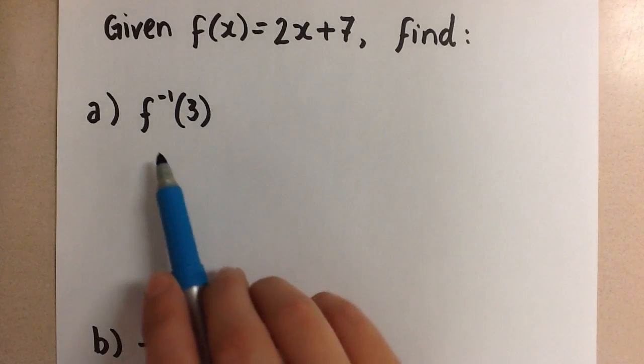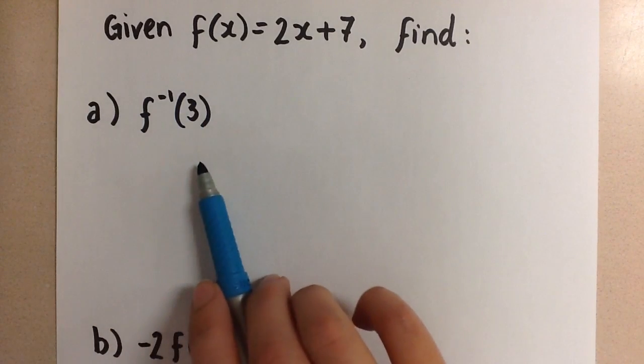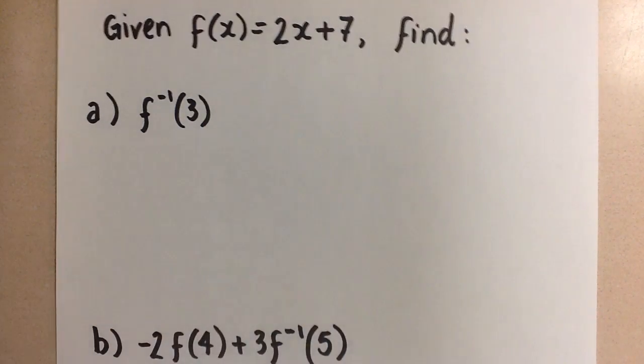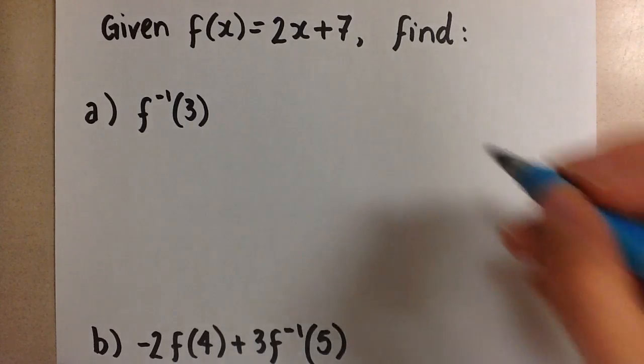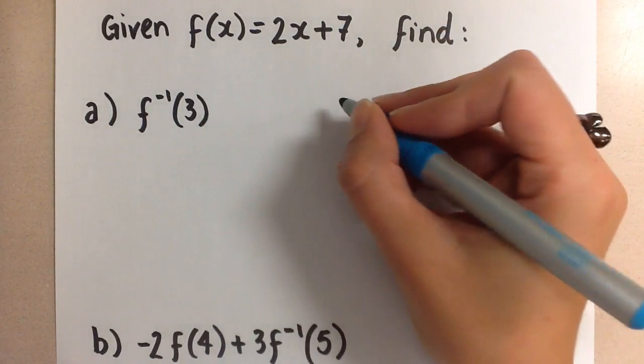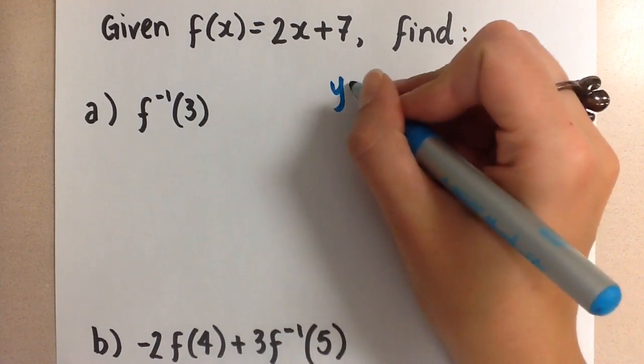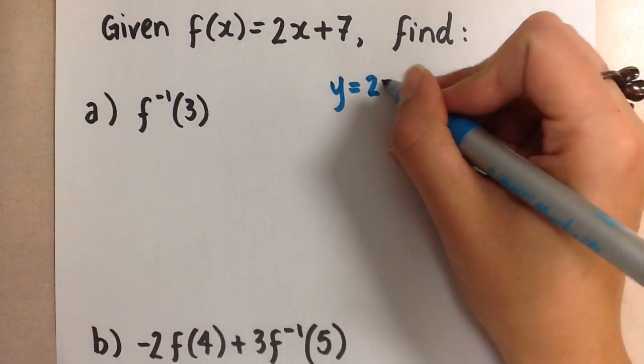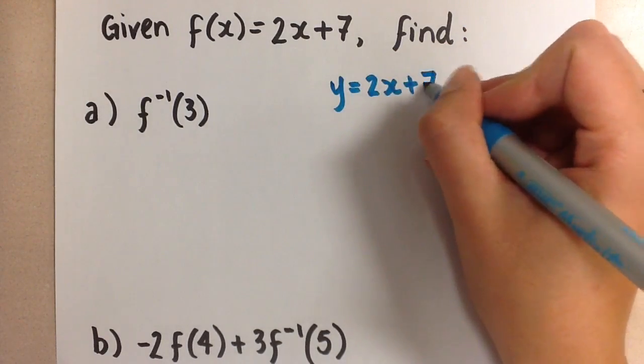So before we can even evaluate this expression here, we need to find the inverse of this function. So let's do it over here. We're going to replace the f(x) with the y and get y equals 2x plus 7.